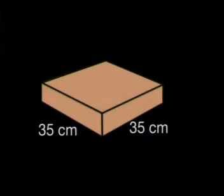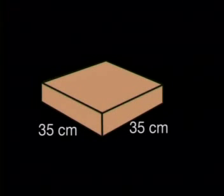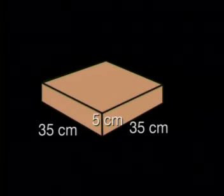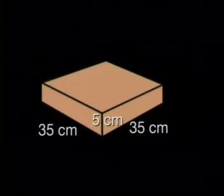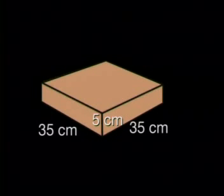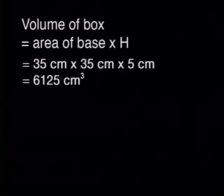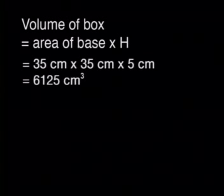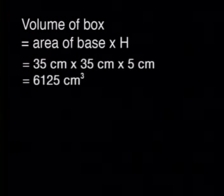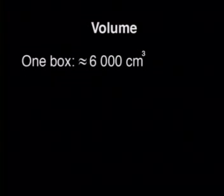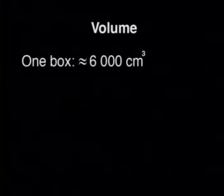Have a look at the shape of this pizza box. It has a square base of 35 centimeters and a height of 5 centimeters. Although I don't know what the volume of the pizza was that was in it, I did work out the volume of this pizza box. It is 6,125 cubic centimeters — that's just over 6,000 cubic centimeters.